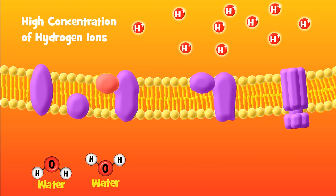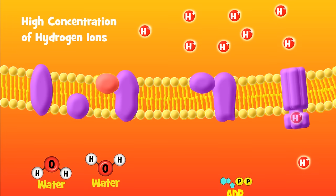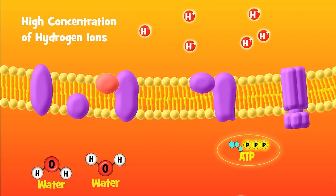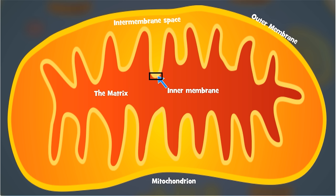Why? Because the vast majority of our ATP is made here. The electron transport chain is actually a series of proteins and other molecules embedded in the inner membrane of the mitochondrion. These molecules transport electrons, hence the name.